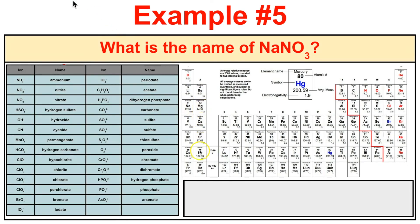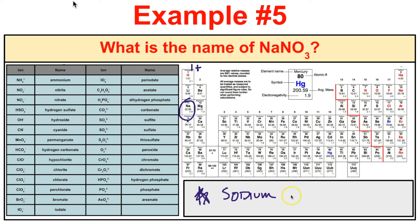What is the name of NaNO3? Na is sodium, and sodium comes from Group 1 on the periodic table, so it's a Type 1 metal. All these metals form 1+ ions, so no Roman numeral is needed. NO3- is nitrate. Put it together: sodium nitrate.